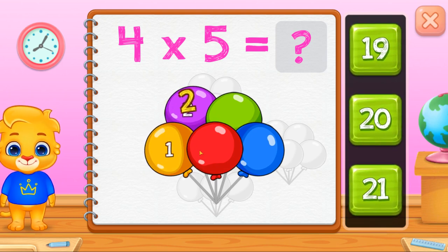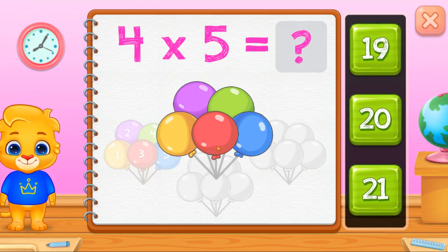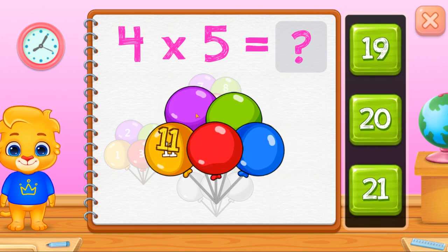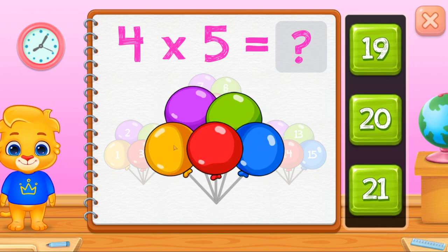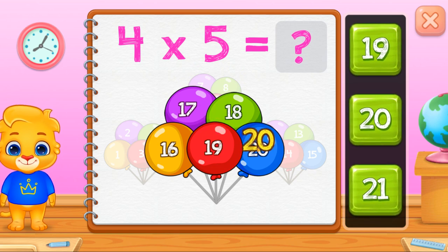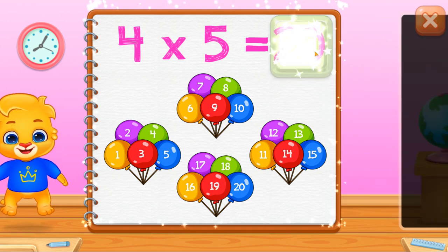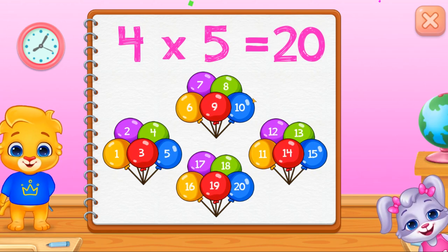One, two, three, four, five. Six, seven, eight, nine, ten. Eleven, twelve, thirteen, fourteen, fifteen, sixteen, seventeen, eighteen, nineteen, twenty. Four times five equals twenty.